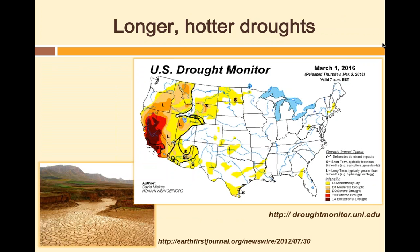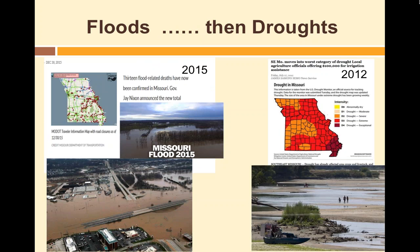Conversely, other places are getting longer and hotter droughts. The most significant one in the U.S. right now is California's drought over the past five to six years — California provides more than 95 percent of strawberries, broccoli, almonds, and much of the produce we depend upon. Some places are getting floods and then droughts, going back and forth — Missouri had a serious flood in 2015 and was experiencing severe droughts in 2012. But by the end of the presentation, I hope you see this not as disaster but as an opportunity.